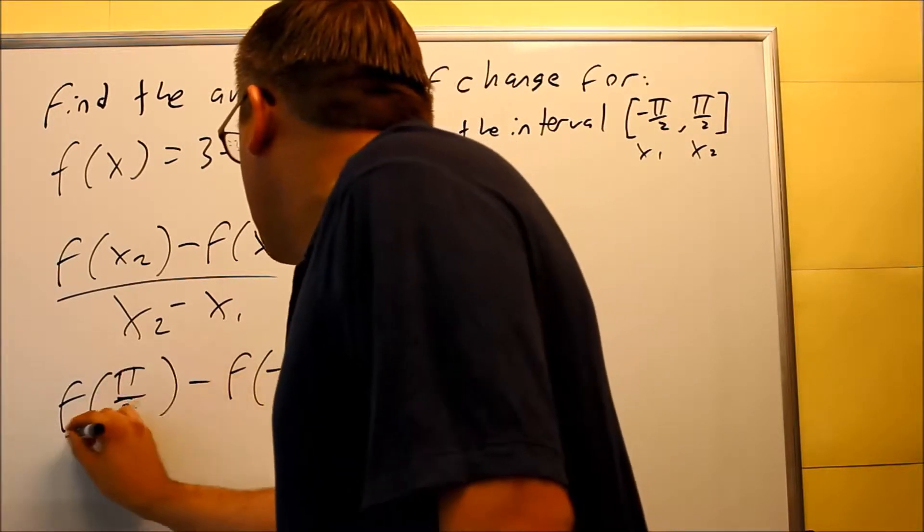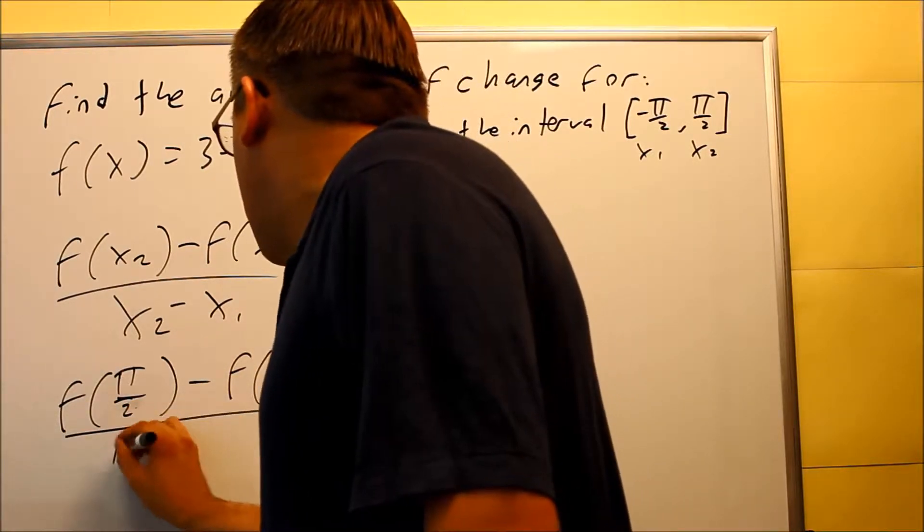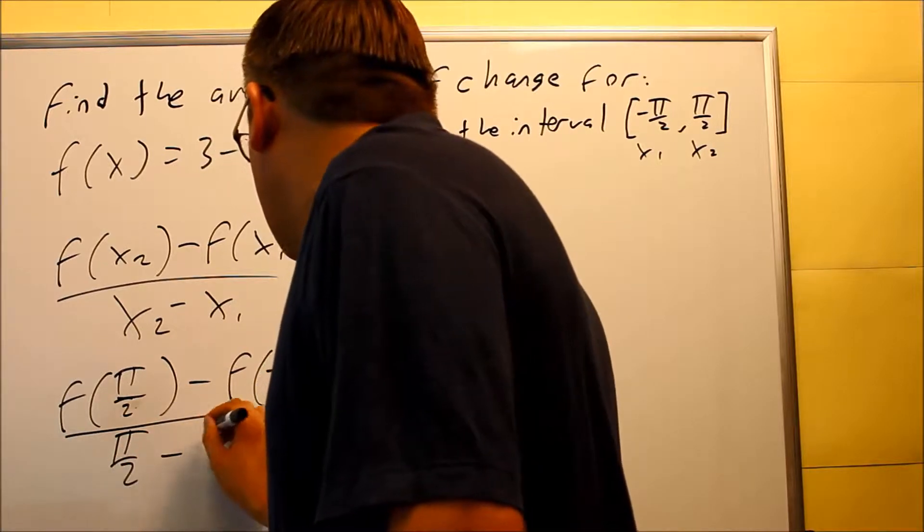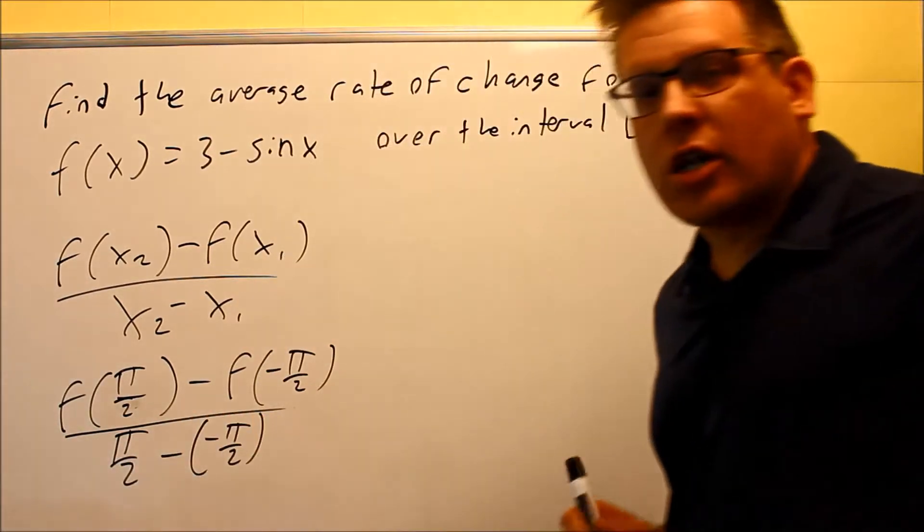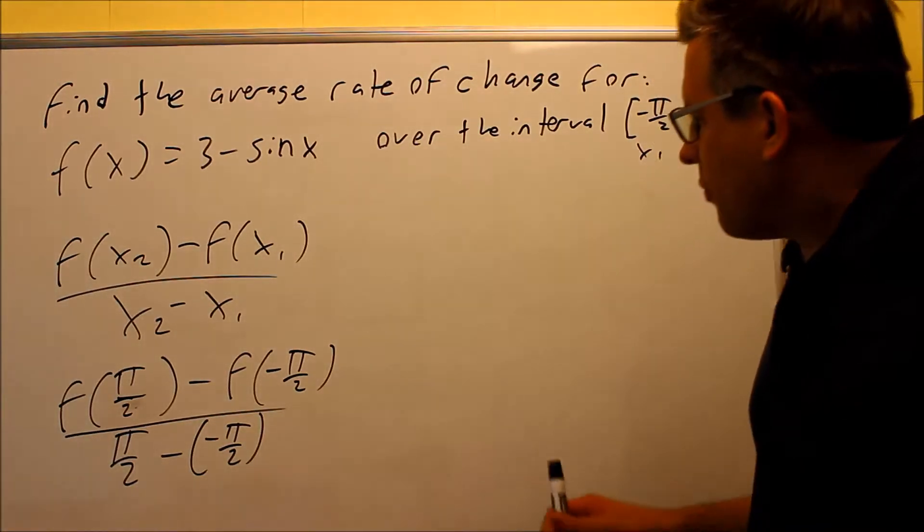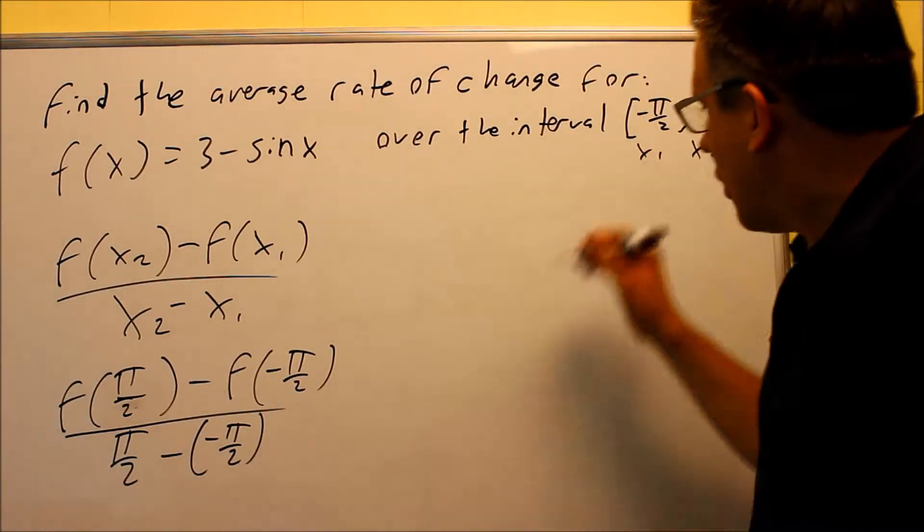On the bottom, we're going to subtract those: pi over 2 minus negative pi over 2, so be careful with the negatives there. You have a double negative happening down below. Let's do that off to the side.